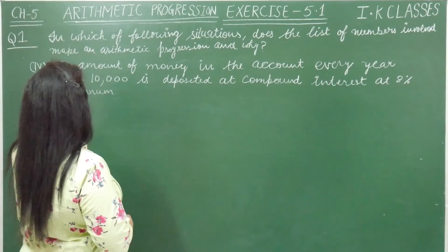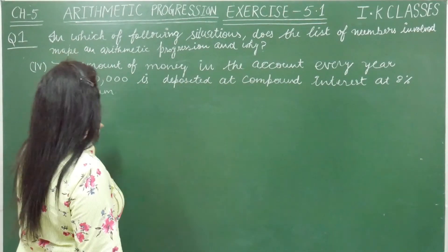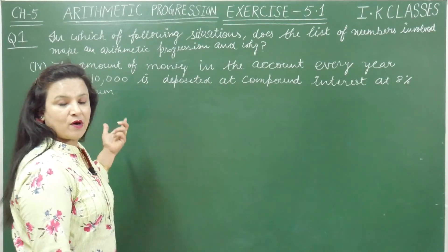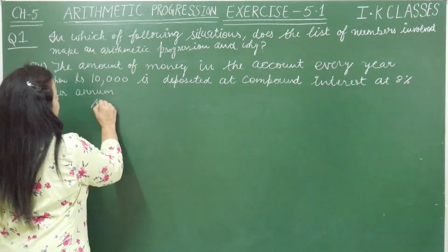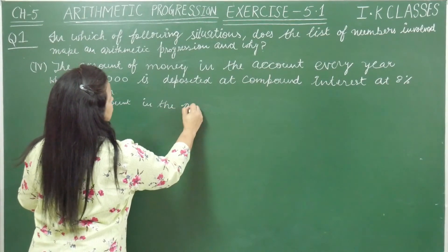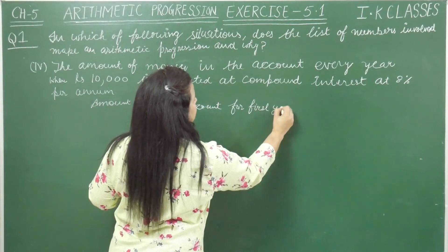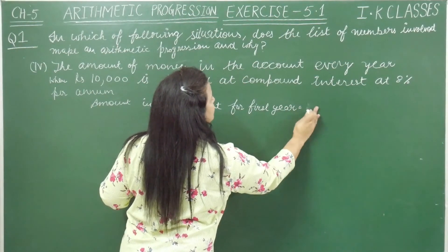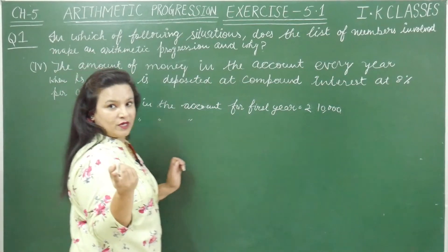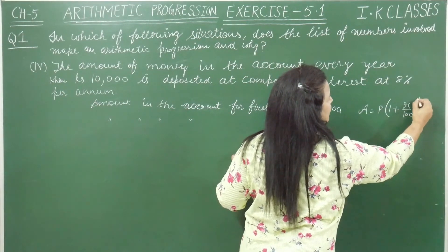The fourth situation: the amount of money in the account every year when rupees 10,000 is deposited at compound interest at 8% per annum. The amount for the first year is rupees 10,000. To find subsequent amounts, we use the formula: Amount = Principal × (1 + R/100)^T.